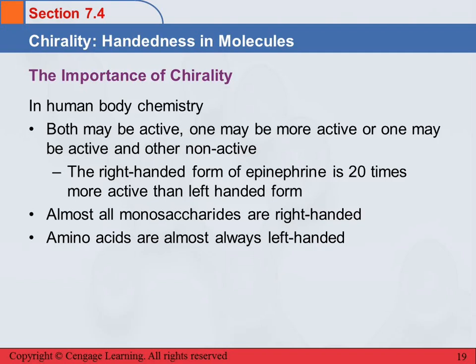Chirality in biology is very important. In the human body, the right-handed versus the left-handed version may both be active, or one might be a lot more active than the other, or one may be active and the other completely non-active. An example is the right-handed form of epinephrine is 20 times more active than the left-handed form. Interestingly, almost all the monosaccharides are considered right-handed, and the amino acids are almost always left-handed.